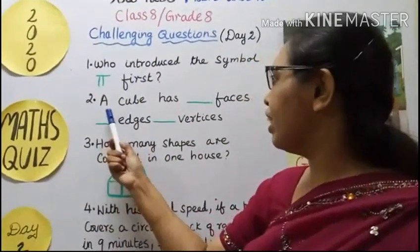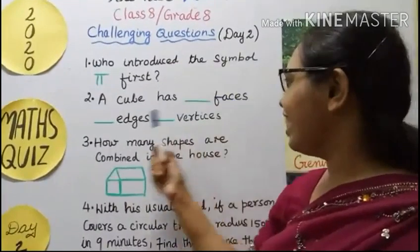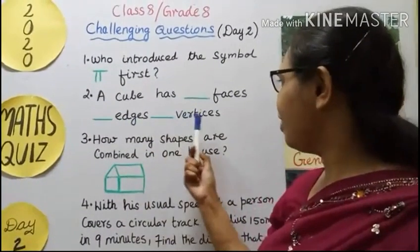Second question: A cube has dash faces, dash edges, dash vertices.